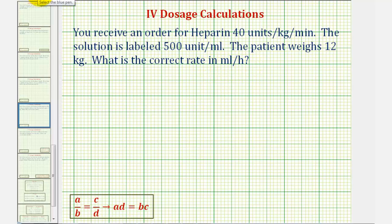We'll solve this problem using proportions. We'll begin by determining how many units the patient needs per minute based upon their weight. So we know the requirement is 40 units per one kilogram. This must equal the rate of an unknown number of units, we'll call it x units, to the patient's weight of 12 kilograms.